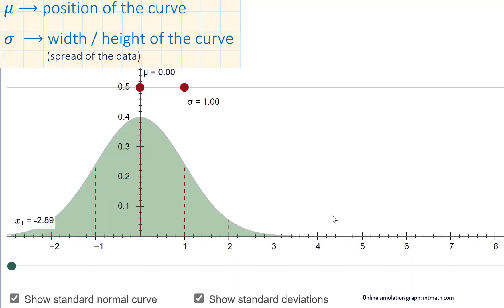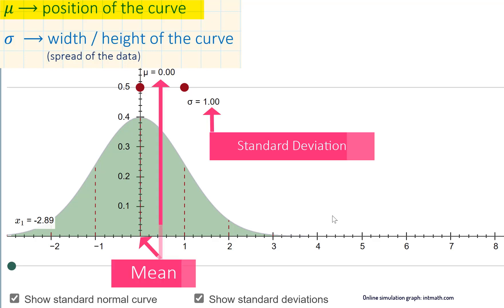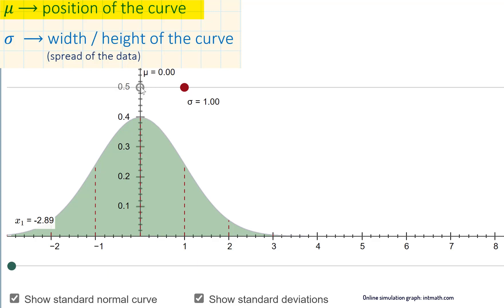The mean determines the position of the normal distribution curve. For example, let's start with the standard normal distribution, where the mean is equal to 0 and standard deviation is equal to 1. If we decrease or increase the mean, we can see that the curve will move left or right according to the mean value, because the data will always cluster around the mean value in normally distributed populations. The shape of the curve will stay the same because we keep the standard deviation the same.